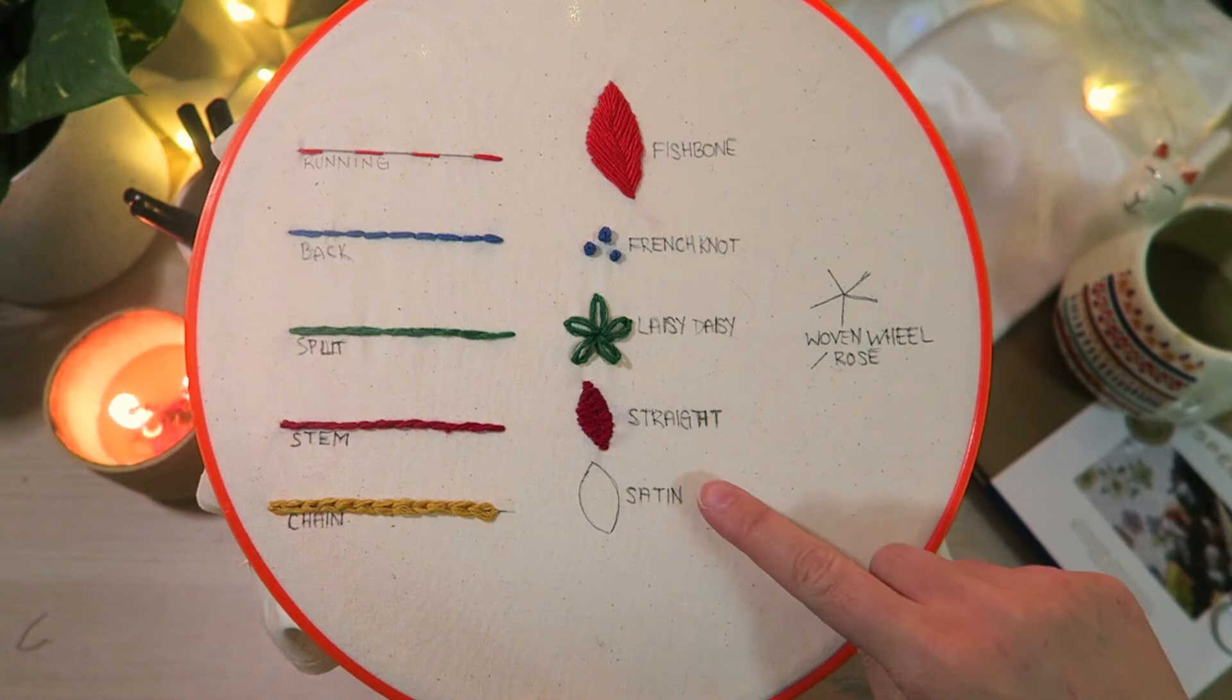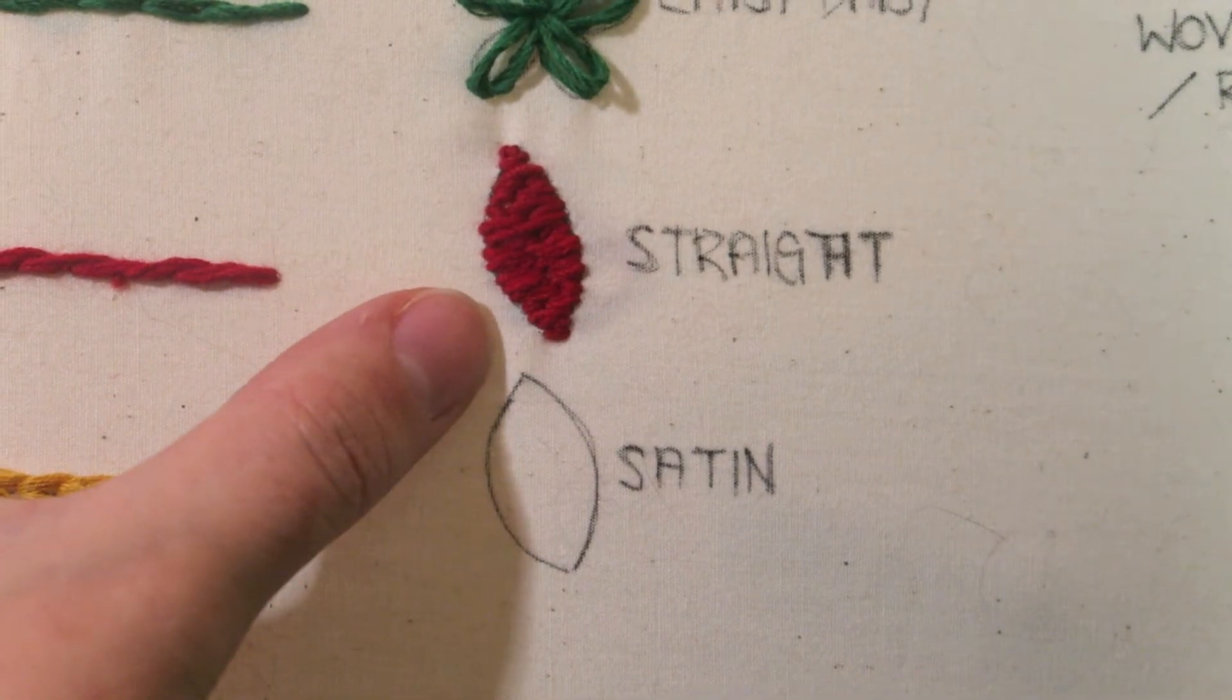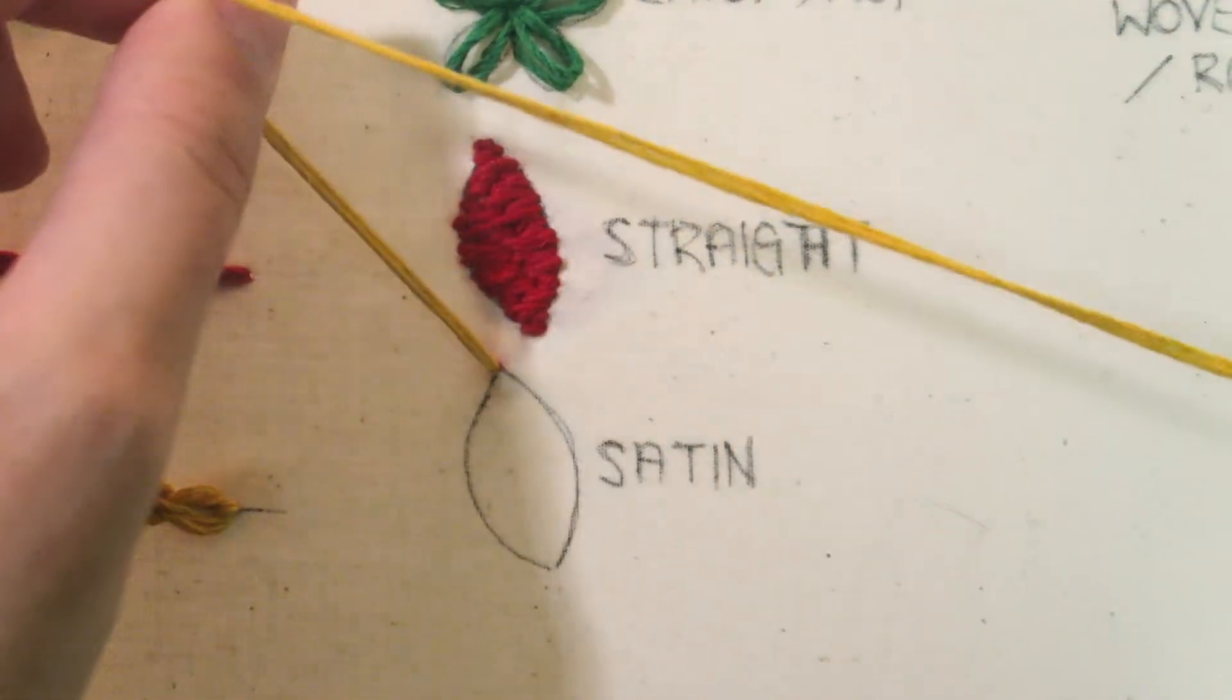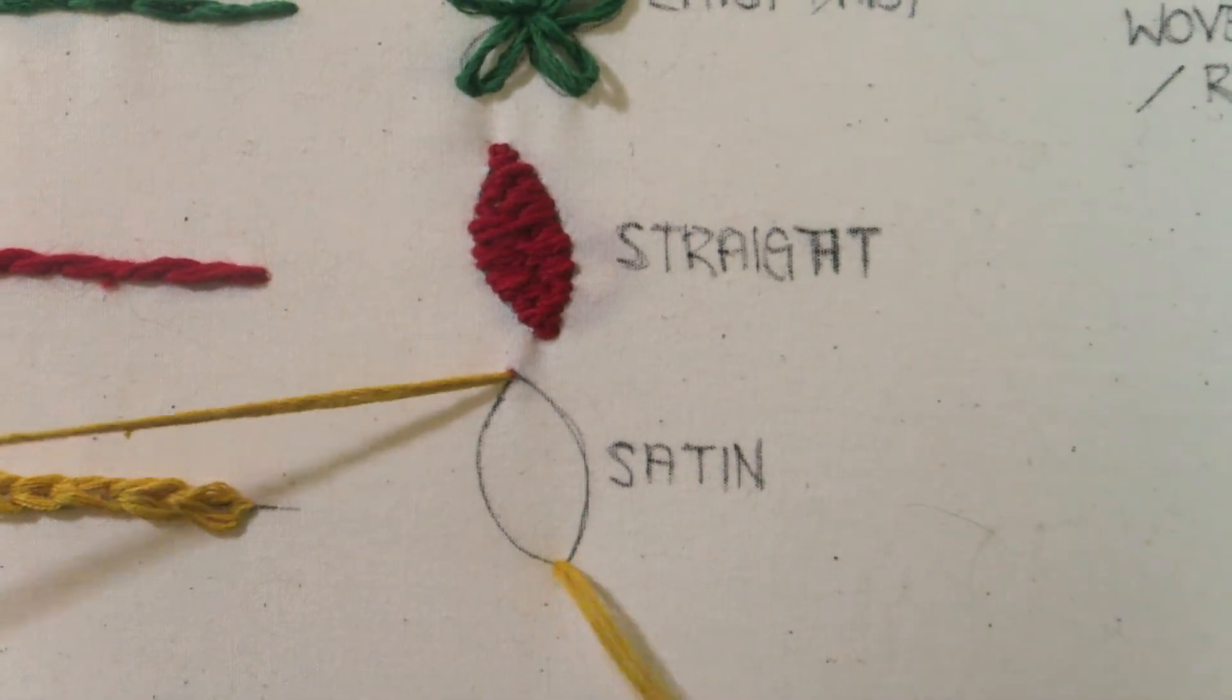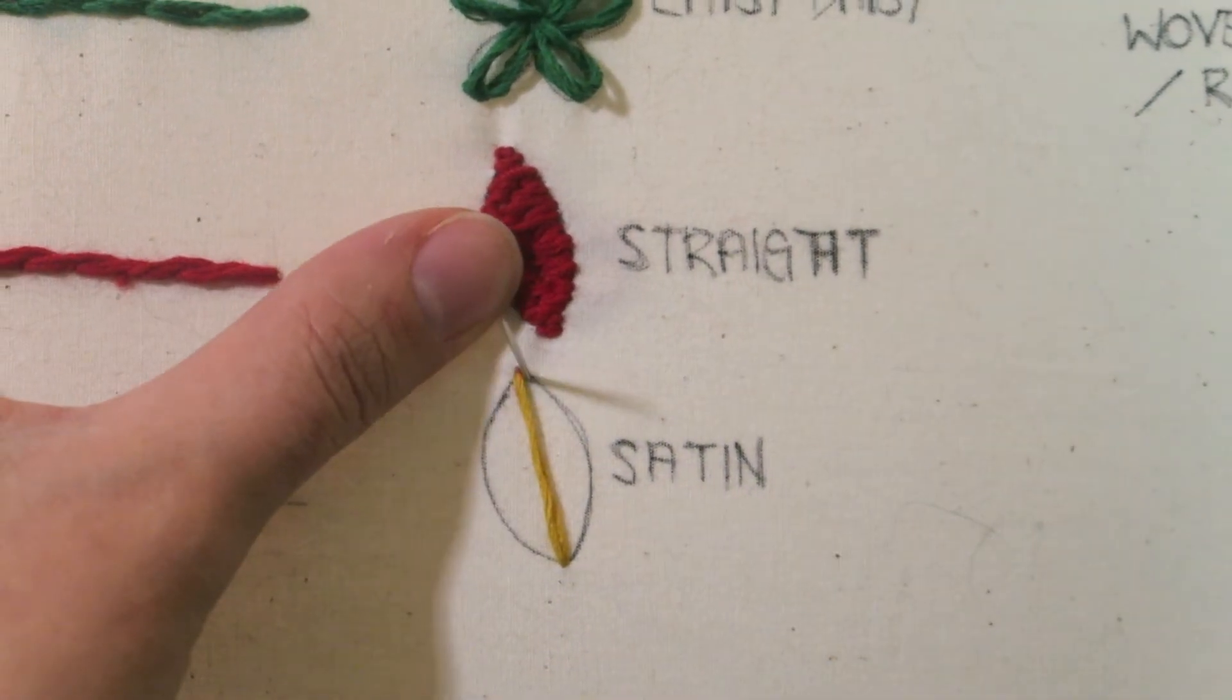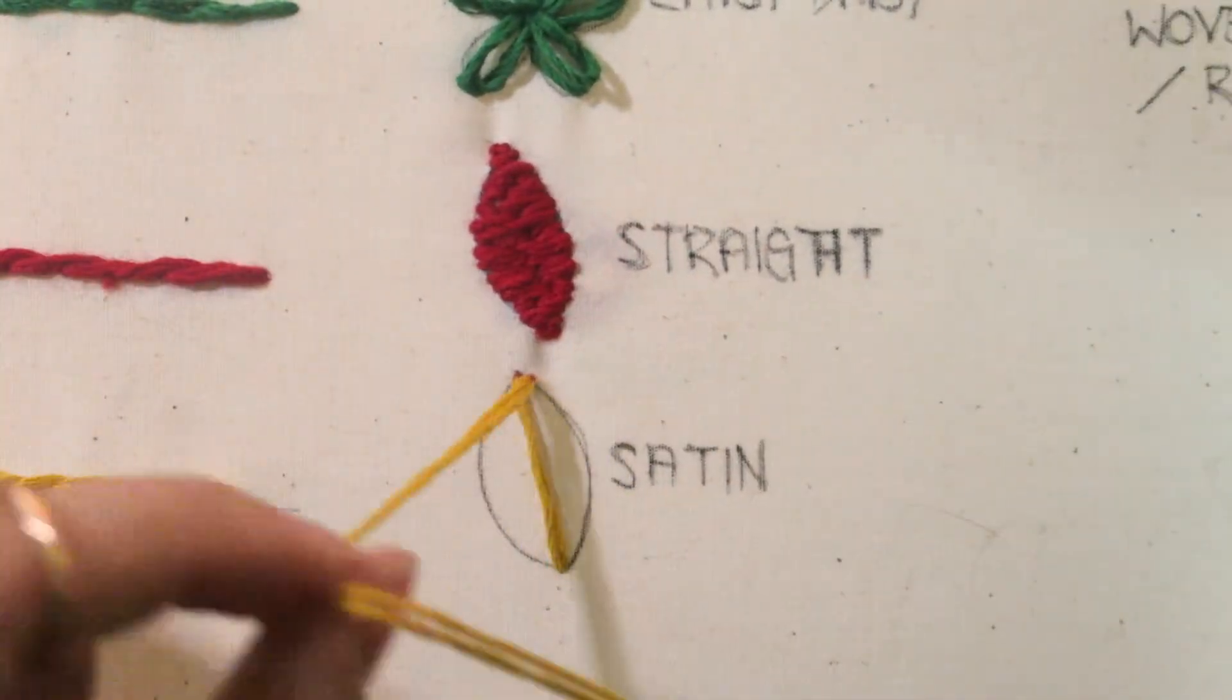Our tenth stitch is the satin stitch. This one is super popular when filling in large spaces and it gives the piece a fluffy look. I don't typically use this type of stitch in my designs because I just love the straight stitch so much. But this stitch is exactly like the straight stitch except the stitches are long. When I do these satin stitches, I make sure I do it slowly to ensure that my thread isn't tangled.